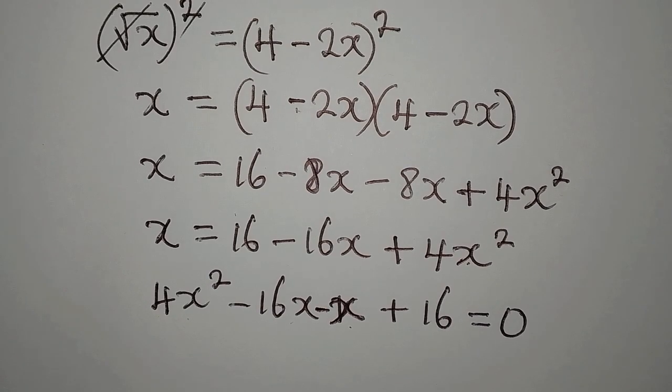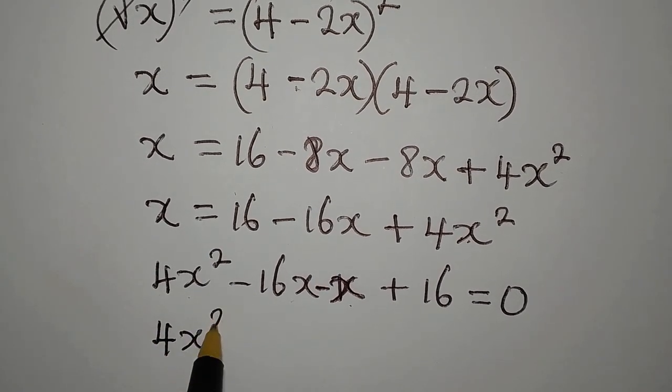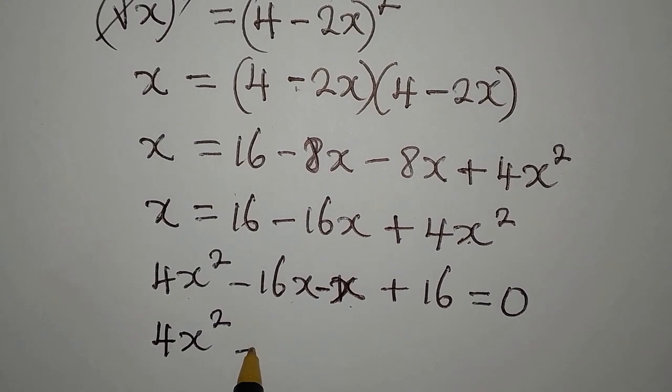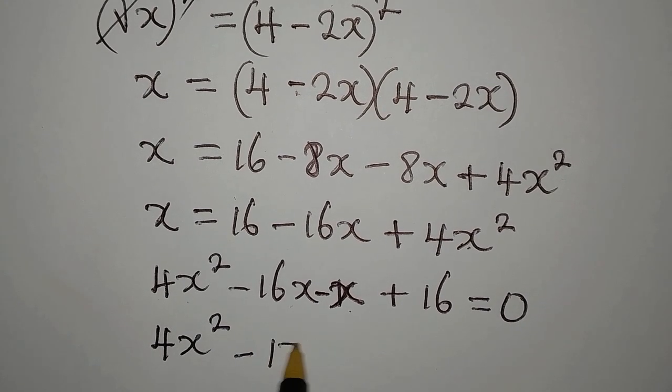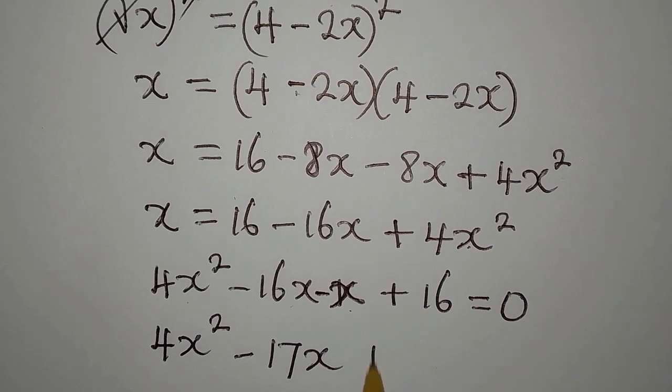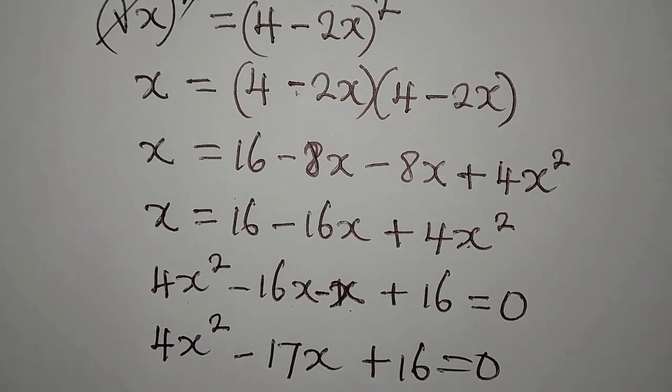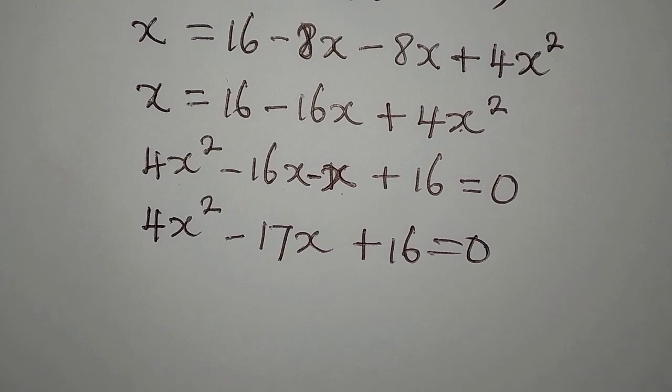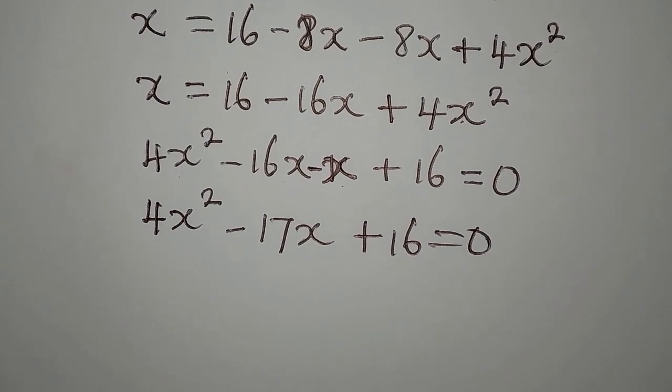We have 4x squared minus 17x plus 16 equals zero. We're going to use quadratic formula for this.